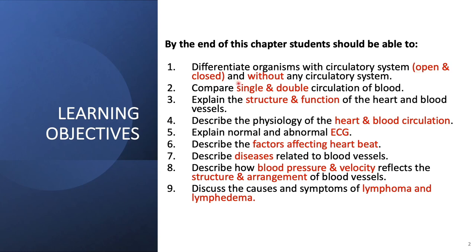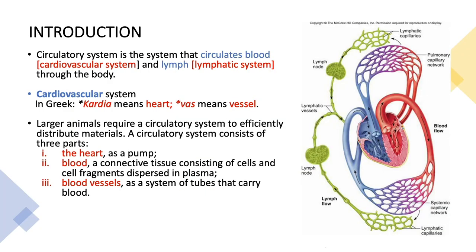Number two: compare single and double circulation of blood. Number three: explain the structure and function of the heart and blood vessels. Number four: describe the physiology of the heart and blood circulation. Number five: explain normal and abnormal ECG. Number six: describe the factors affecting heartbeat. Number seven: describe diseases related to blood vessels. Number eight: describe how blood pressure and velocity reflects the structure and arrangement of blood vessels.